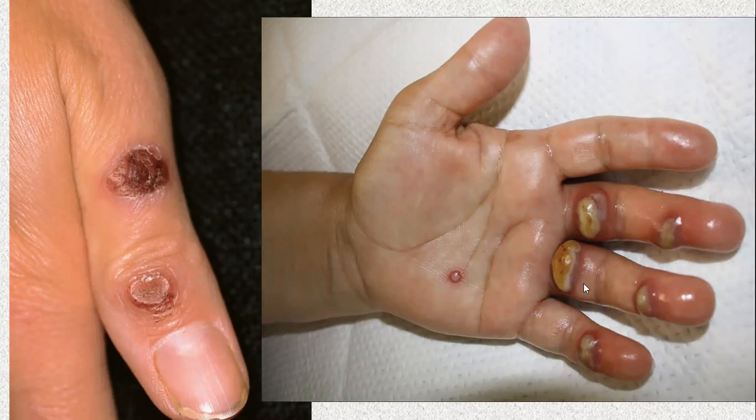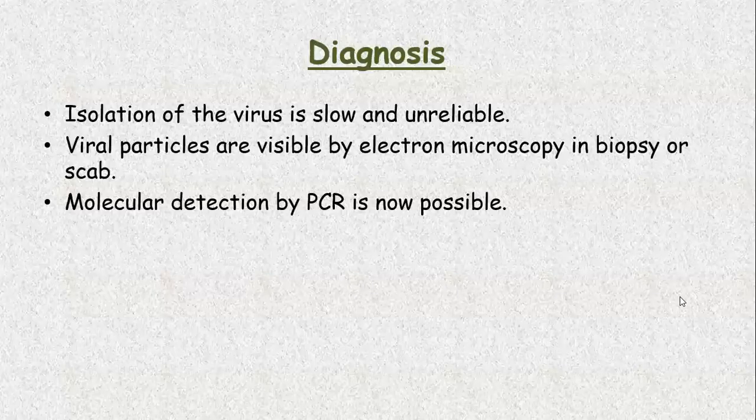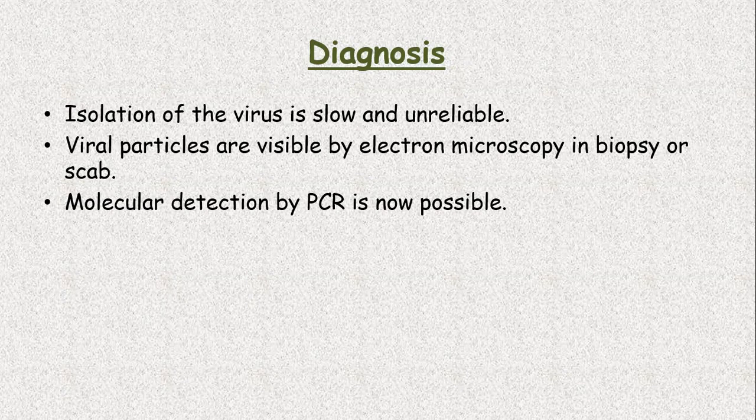These are the multiple milker nodules on the hands. Diagnosis: isolation of virus is slow and unreliable. Viral particles are visible by electron microscopy in biopsy or in a scab, and molecular detection by PCR is now possible.